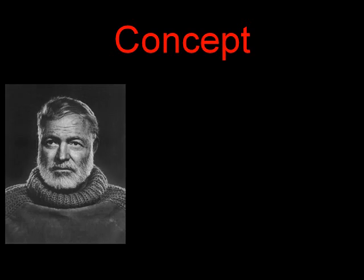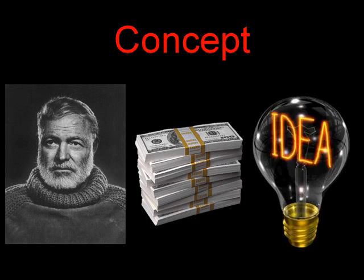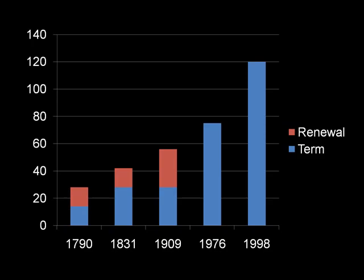The general concept is that you take an author like Mr. Hemingway and you provide incentives for him to produce more great ideas. Generally, our country is better off — that's the concept. Historically, we have extended the term of copyright from the original conception of around 14 years all the way up now to 120 years.